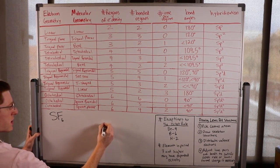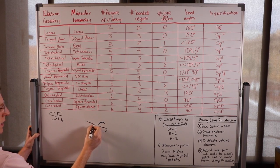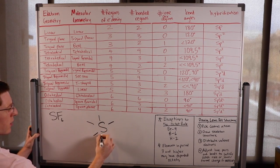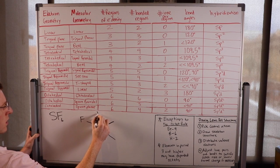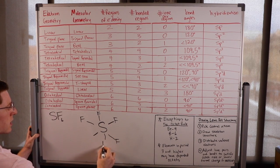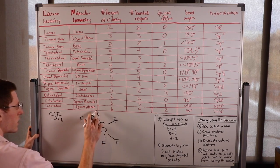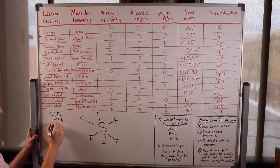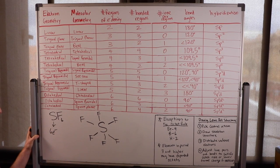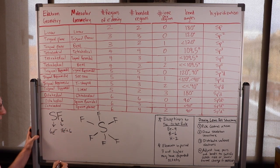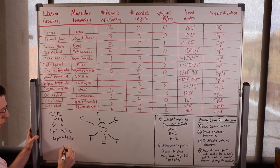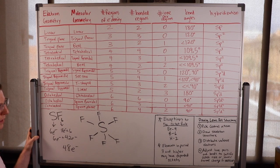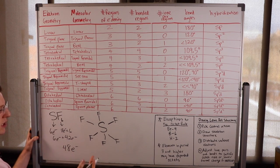Moving on to SF6. The central atom is sulfur and I'll attach my six outer fluorine atoms to draw the skeleton structure. Sulfur is from group 6A, contributing six electrons. Fluorine is in group 7A contributing seven electrons each, and there are six of them. So 42 plus 6 gives 48 electrons total. We've already used 12 for six bonds, so we have 36 left.